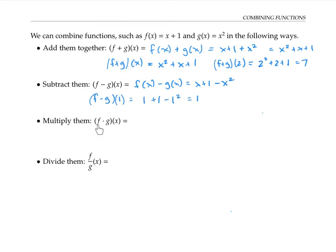The notation f dot g of x, which is sometimes also written just as f g of x, means we take f of x times g of x. In other words, x plus one times x squared, which could be simplified as x cubed plus x squared.